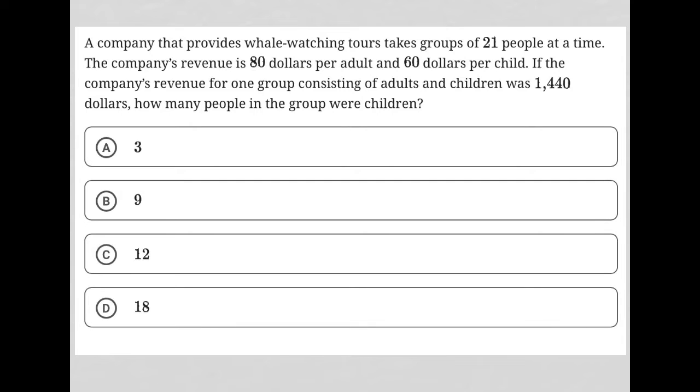This question says a company that provides whale watching tours takes groups of 21 people at a time. The company's revenue is $80 per adult and $60 per child.